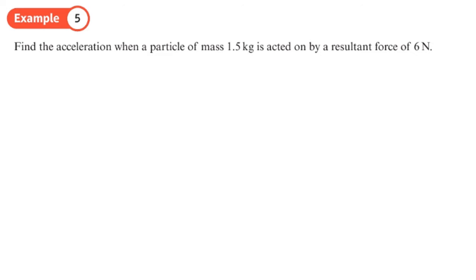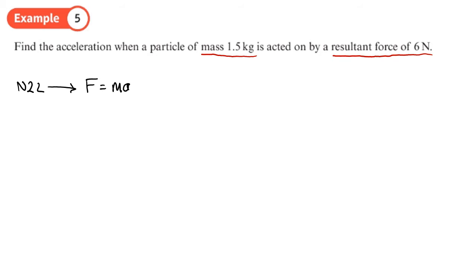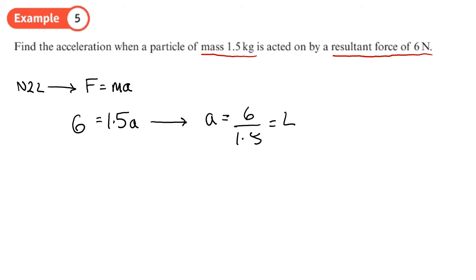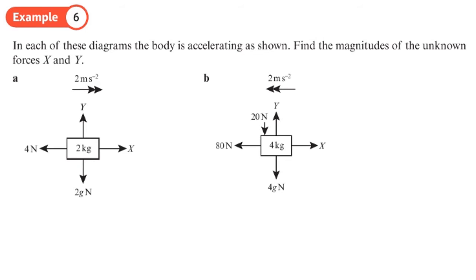This question says: find the acceleration of a particle of mass 1.5 kg acted on by a resultant force of 6 Newtons. Using Newton's second law, F equals ma, we have force of 6 and mass of 1.5, so a equals 6 divided by 1.5, which gives a result of 4. The acceleration is 4 meters per second squared.